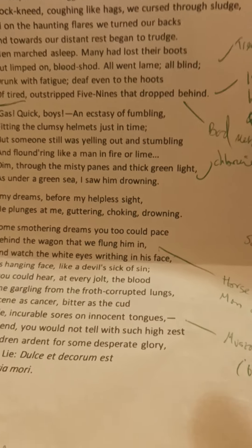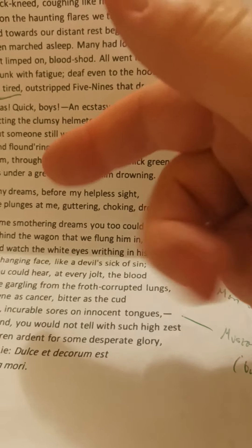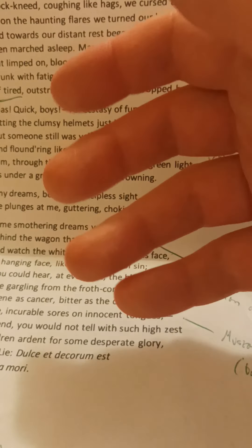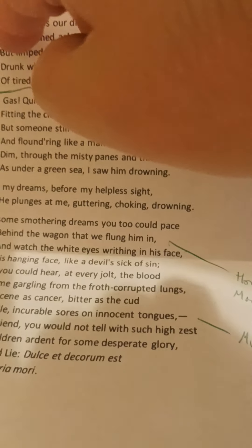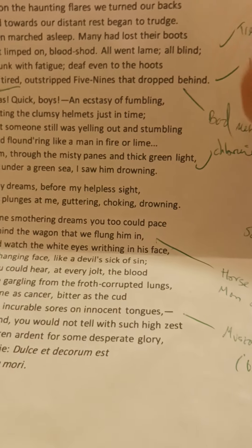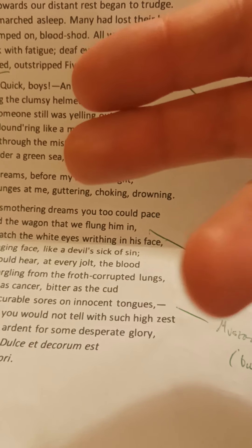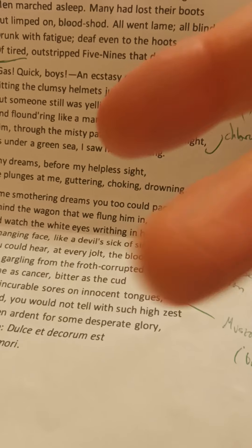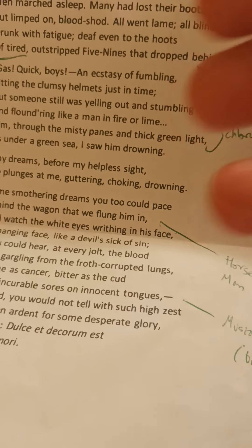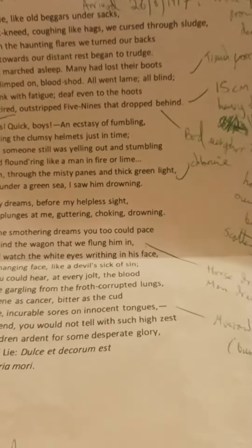So: 'till on the haunting flares we turned our backs' — that works. 'And towards our distant rest began to trudge' — the 'and' doesn't quite fit. 'Men marched asleep. Many had lost their boots, but limped on, blood-shod.' Of tired, out-stripped Five-Nines that dropped behind — I'm going to read the whole poem because it's great and I love it.